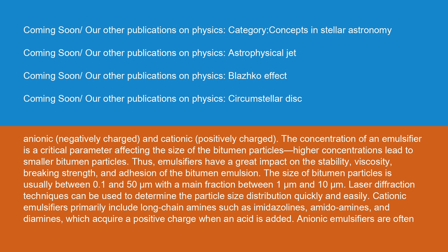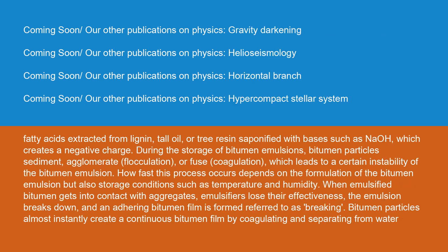Cationic emulsifiers primarily include long-chain amines such as imidazolines, amidoamines, and diamines, which acquire a positive charge when an acid is added. Anionic emulsifiers are often fatty acids extracted from lignin, tall oil, or tree resin saponified with bases such as NaOH, which creates a negative charge. During the storage of bitumen emulsions, bitumen particles sediment, agglomerate (flocculation), or fuse (coagulation), which leads to a certain instability of the bitumen emulsion. How fast this process occurs depends on the formulation of the bitumen emulsion, but also storage conditions such as temperature and humidity. When emulsified bitumen gets into contact with aggregates, emulsifiers lose their effectiveness, the emulsion breaks down, and an adhering bitumen film is formed — referred to as breaking.